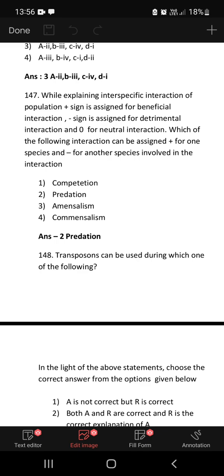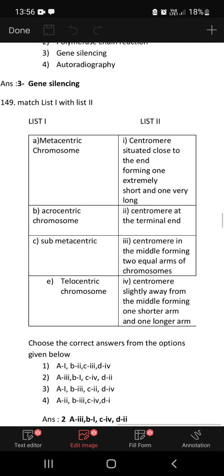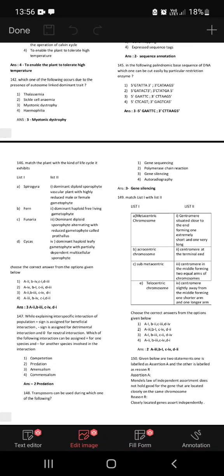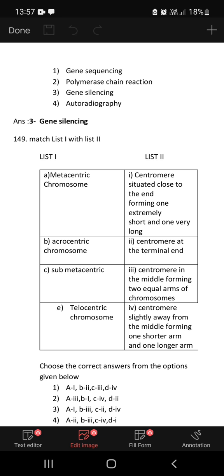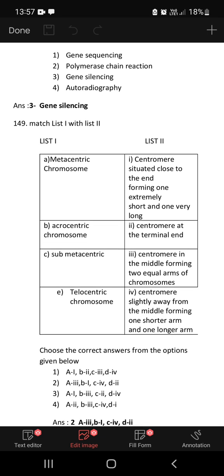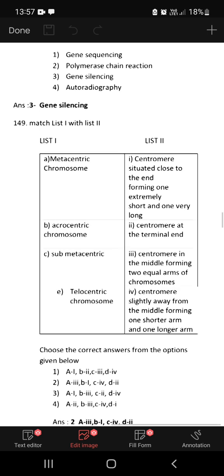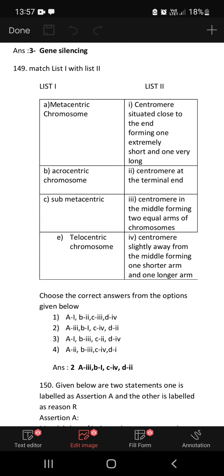Transposons can be used during which one of the following: gene sequencing, polymerase chain reaction, gene silencing, autoradiography? Gene silencing is the answer. You come across this in the nematode control of nematode infestation on tobacco plants.